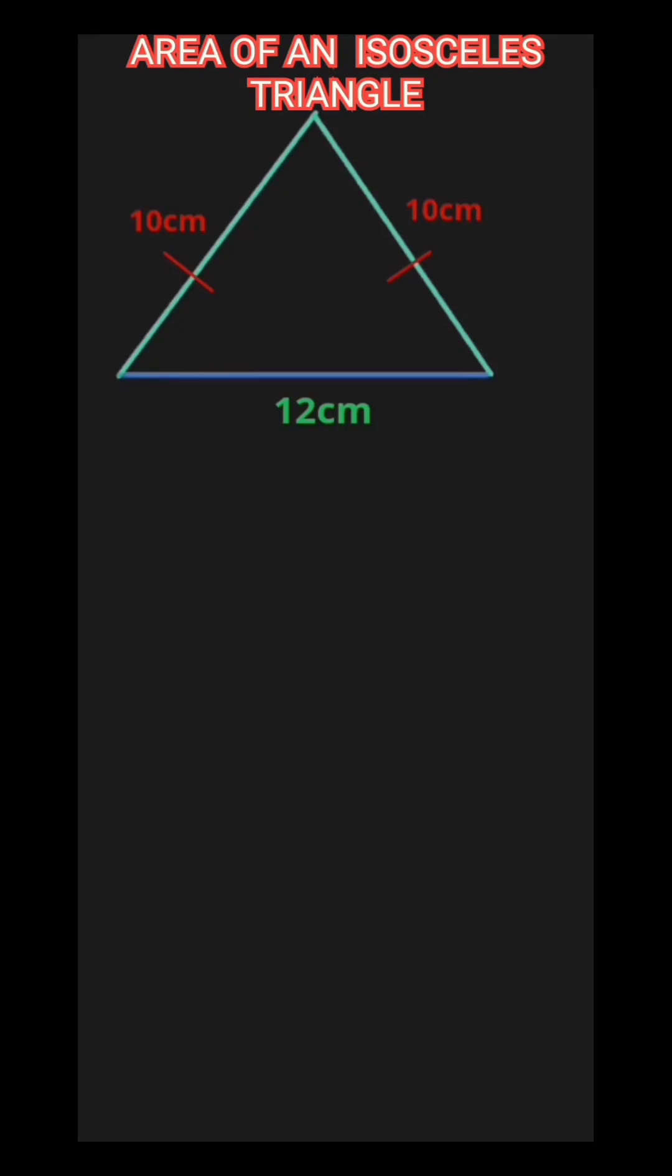Finding the area of this isosceles triangle starts with writing its formula. The formula for finding the area of an isosceles triangle is B over 2 times the square root of A squared minus B squared over 4.